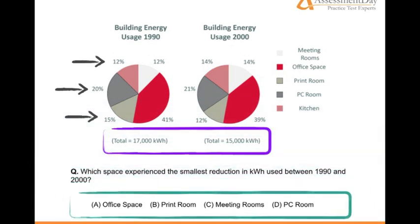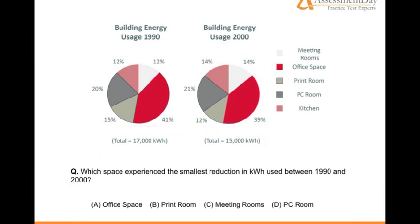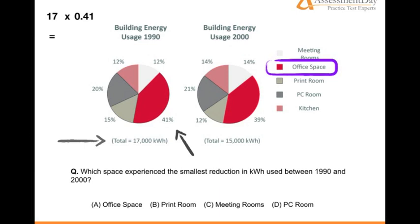A: Office space. B: Print room. C: Meeting rooms. Or D: PC room. So let's start at the top with Office. We take the total kilowatt-hours — 17,000, or 17 — and multiply by its percentage, which is identified by its colour coordination. In this case, bright red. It's 41%, or 0.41. So we take 17 times 0.41, therefore getting 6.97.